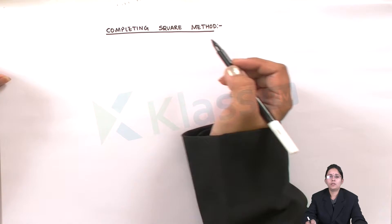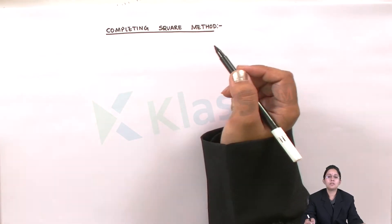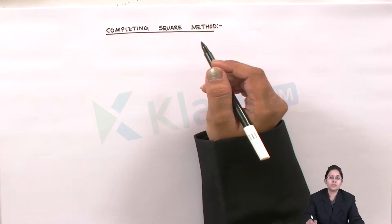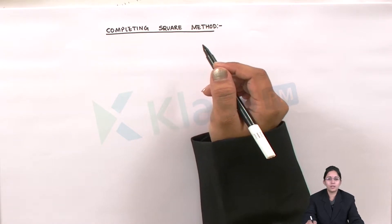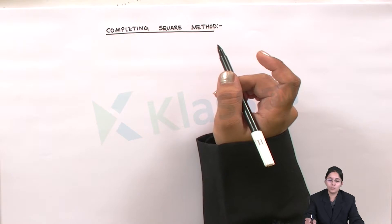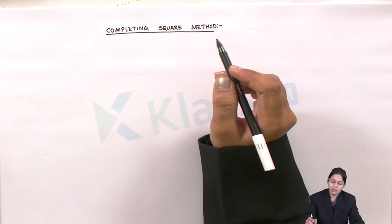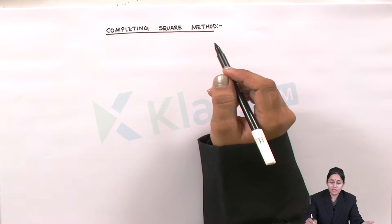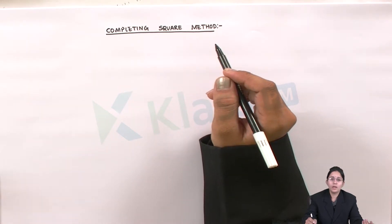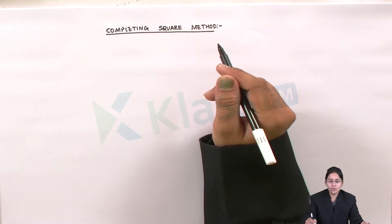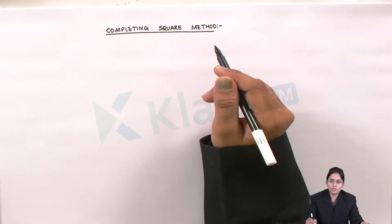If you remember, in our introduction class I discussed the three methods by which we can find the roots for a given quadratic equation — which is a second degree equation. There were three ways: the first one was factorization, the second one was completing square method, and the third one was the quadratic formula. So far in Exercise 5.2 we have been practicing factorization.